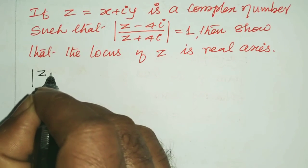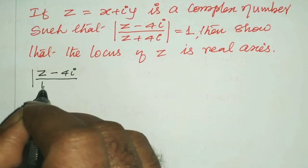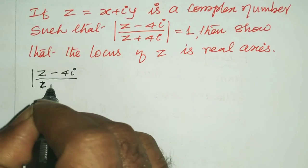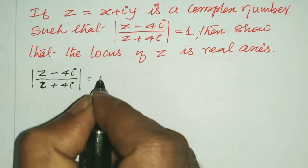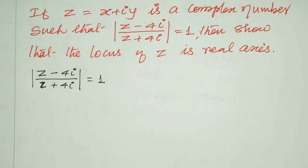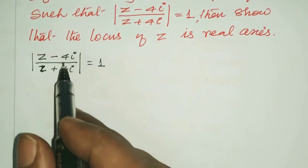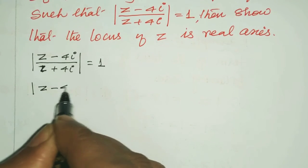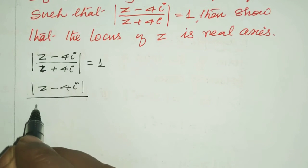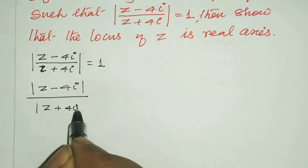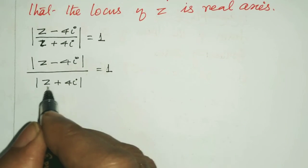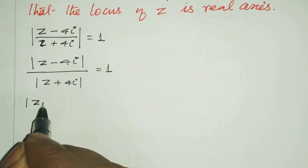We are given: modulus of (z minus 4i) divided by modulus of (z plus 4i) equals 1. This means modulus of (z minus 4i) divided by modulus of (z plus 4i) equals 1.